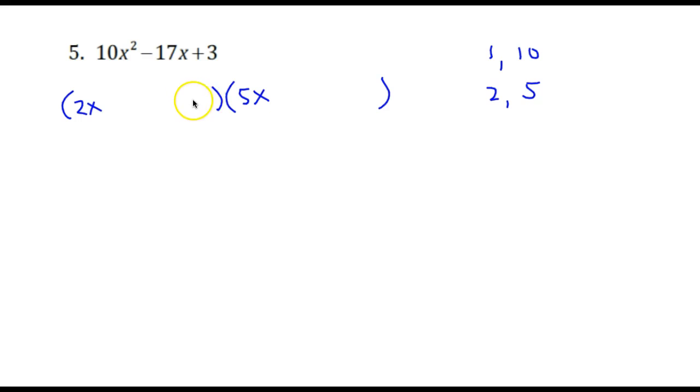We'll put a 3 here and a 1 here. So let's just check what we have so far. This middle term here would be 15x and this product would be 2x.